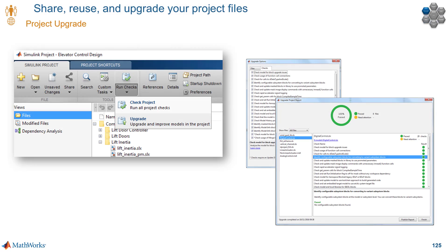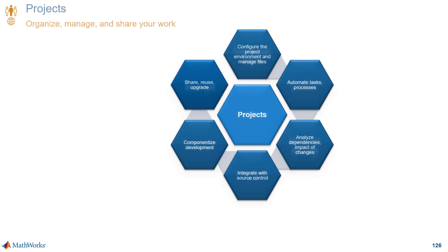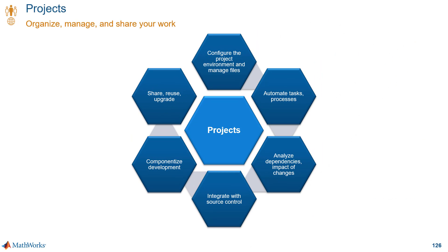Finally, projects help you with the upgrade process, so it's easier to update all the models in your project to the latest release. You don't have to go through the manual process of upgrading one model at a time. The project automatically runs code compatibility checks for MATLAB and Simulink files, applies fixes automatically if you choose to, and generates a report for you. That is projects for working in MATLAB and Simulink. See you in the next video.